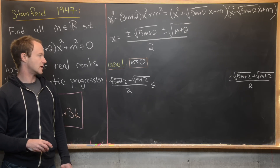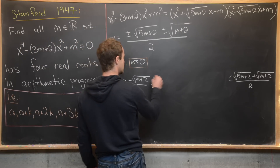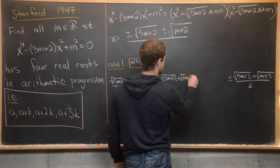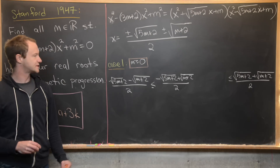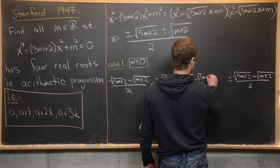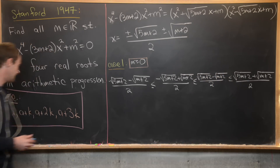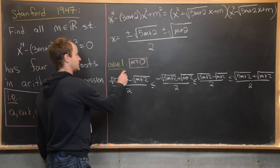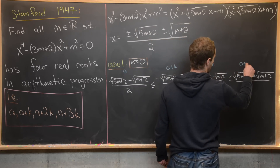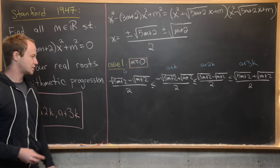For m ≥ 0, the second root is (−√(5m+2) + √(m+2)) / 2 and the third root is (√(5m+2) − √(m+2)) / 2. These correspond to a, a+k, a+2k, a+3k in the arithmetic progression setup.